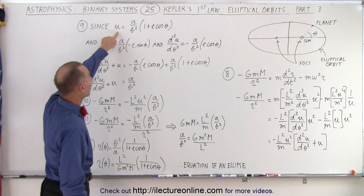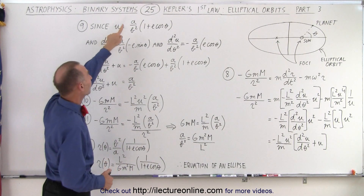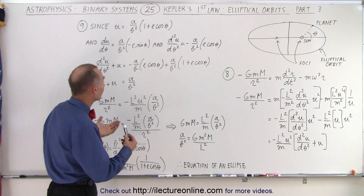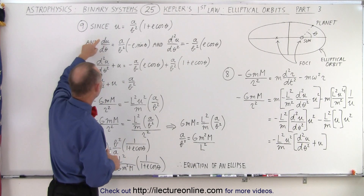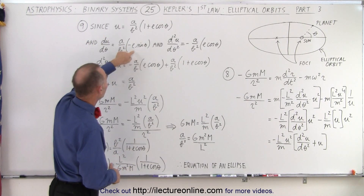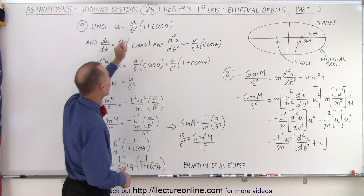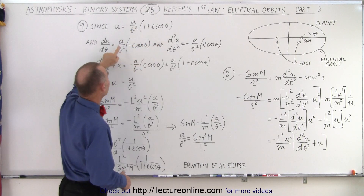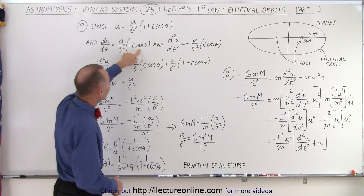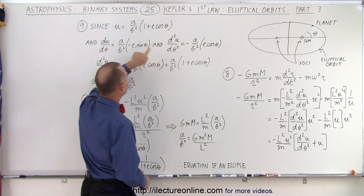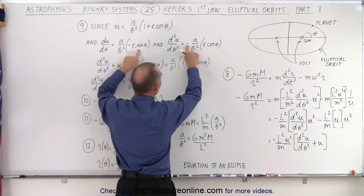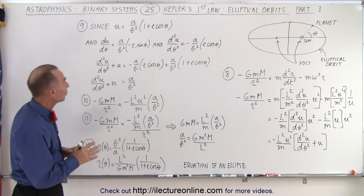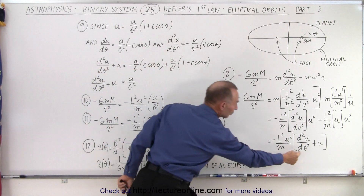We come over here and realize that u, in the previous video, was defined as a over b squared times 1 plus e times the cosine of theta — that was the equation of an elliptical orbit. So if that's true, the first derivative of that would be equal to this, because the first derivative of a over b squared times 1 is simply zero. So it's the first derivative of a over b squared times e cosine theta, which gives a over b squared times minus e times sine of theta. Then when we take the second derivative, the derivative of sine becomes cosine again, and we keep the minus sign, so we end up with minus a over b squared times e cosine theta.